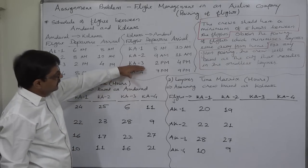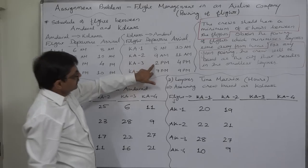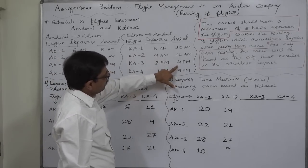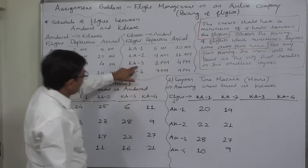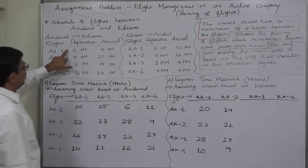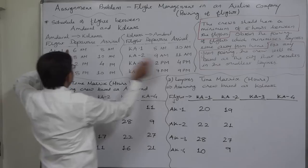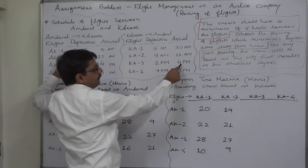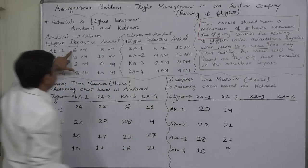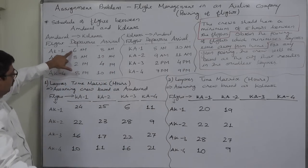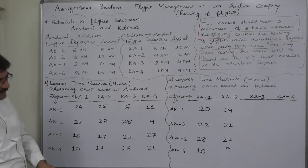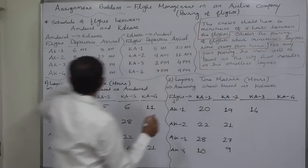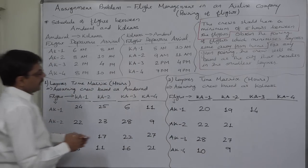KA3 starts from Kolkata at 2 p.m. today and reaches Ahmedabad at 4 p.m. today. If KA3 becomes AK1, the layover time is 4 p.m. today to 6 a.m. tomorrow — 4 p.m. to 12 midnight is 8 hours, plus 6 hours in the morning, so 8 plus 6 gives 14 hours of layover time.